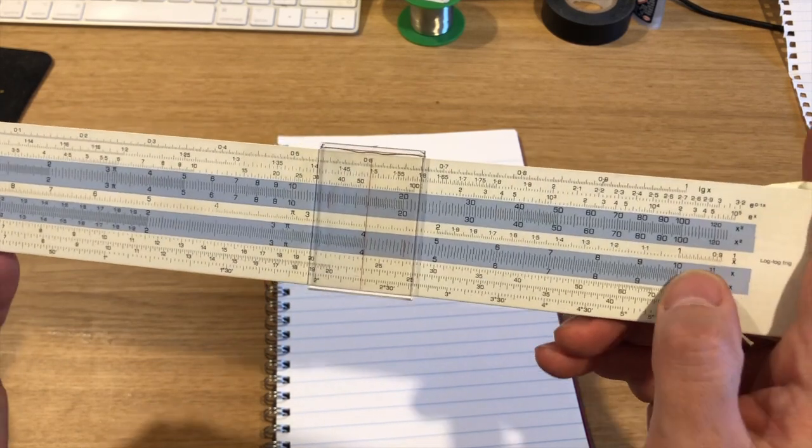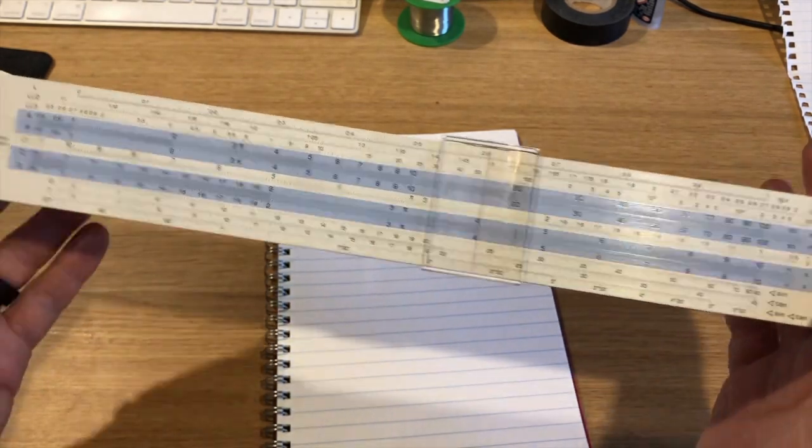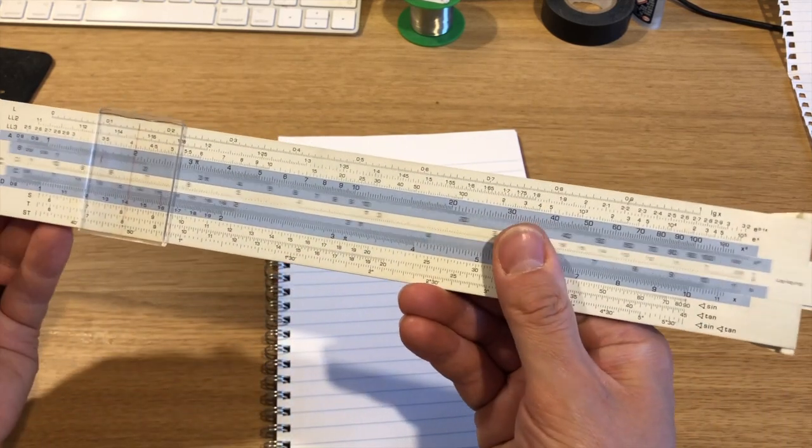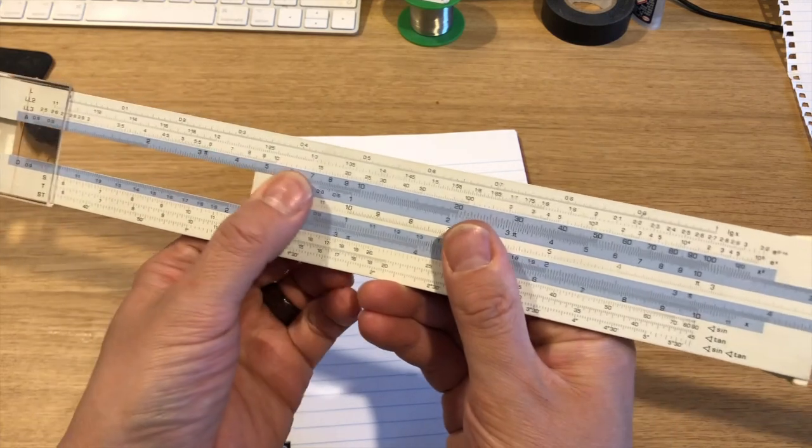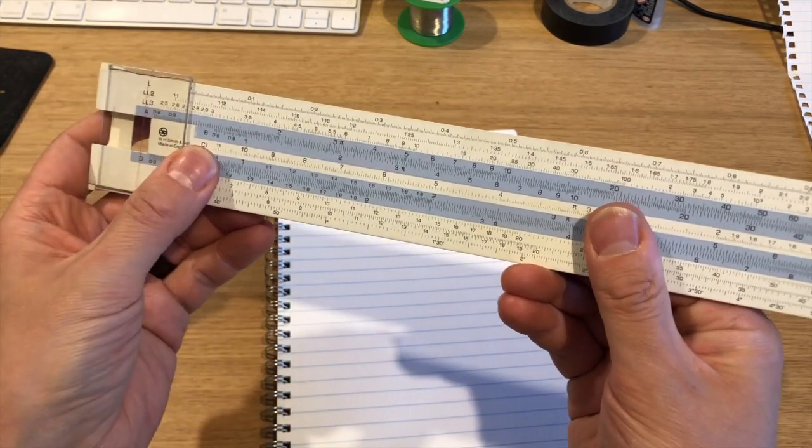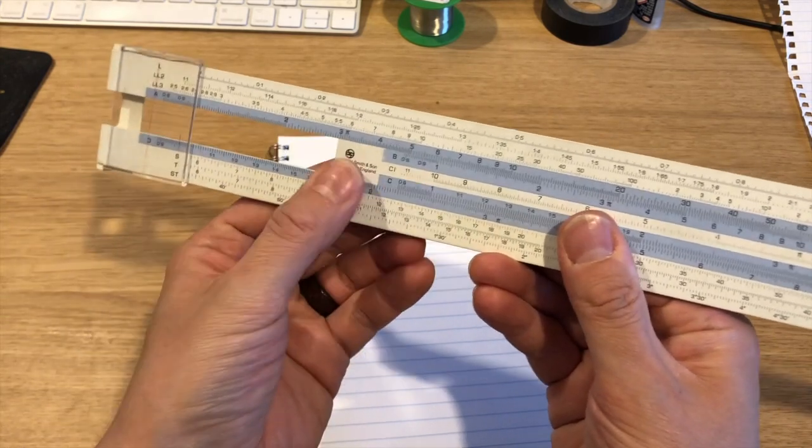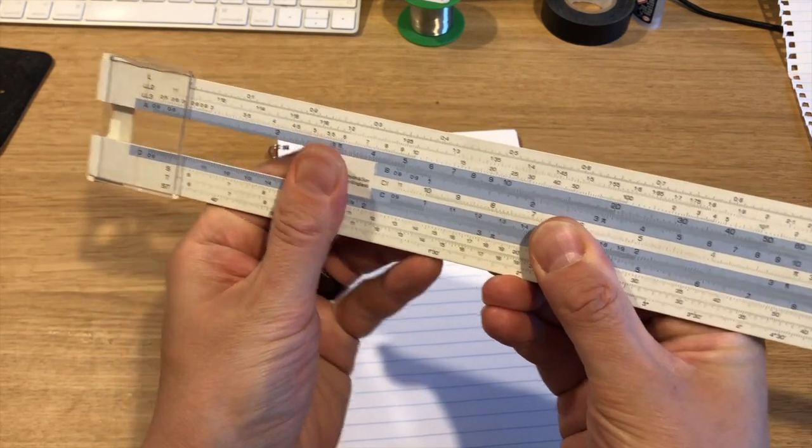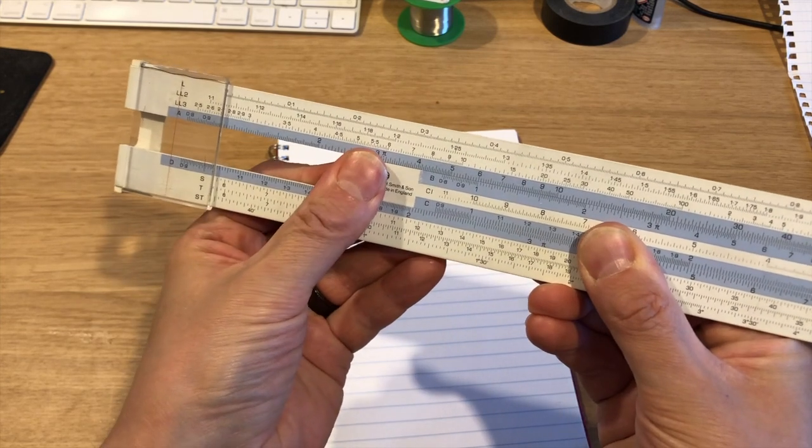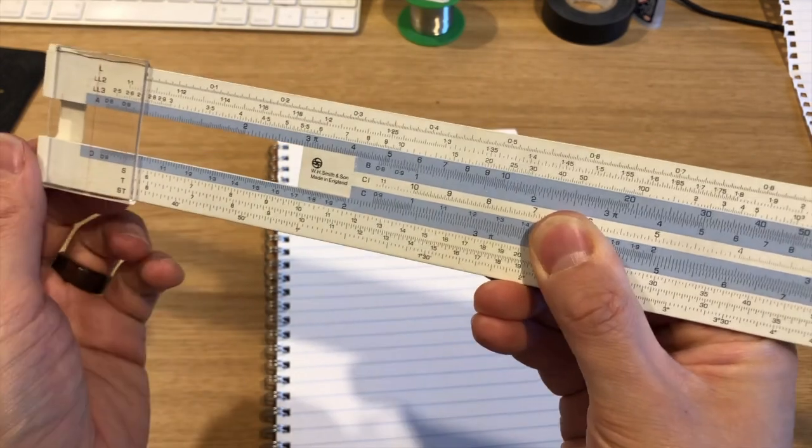Now let's say we want to do a simple multiplication on this thing. So the obvious one, 6 times 7, ultimate answer. Slide this across here. So let's say I want 6 times 7. I line up my 1 here, 6. Like so. So you can see that 1 lines up with the 6.